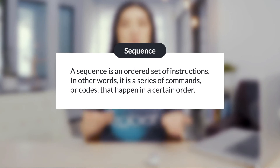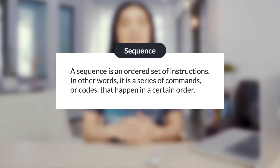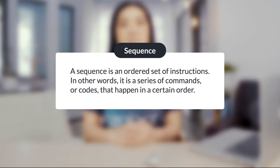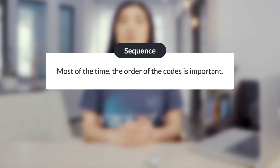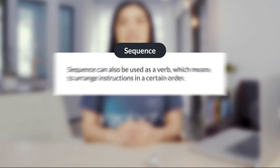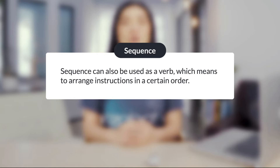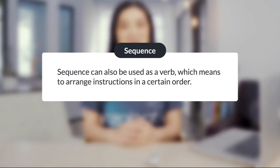In computer science, a sequence is an ordered set of instructions. In other words, it is a series of commands or codes that happen in a certain order. Most of the time, the order of codes is important. Sequence can also be used as a verb or action word, which means to arrange instructions in a certain order.